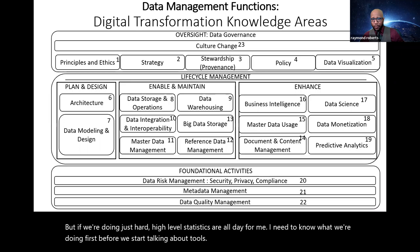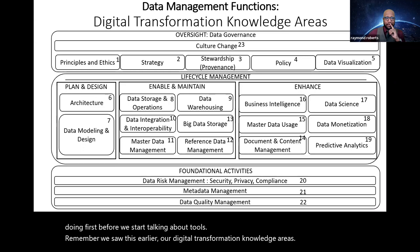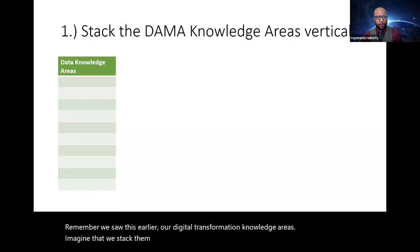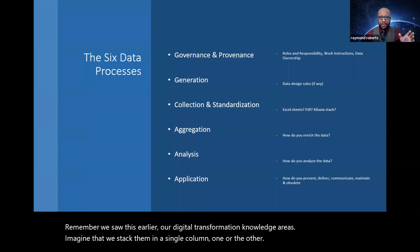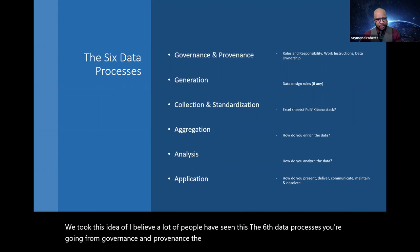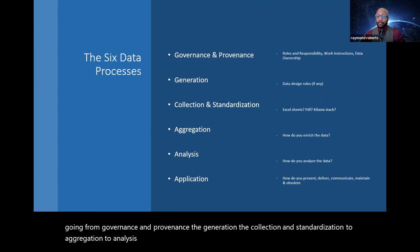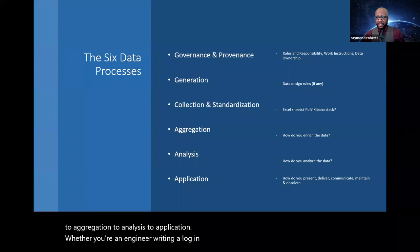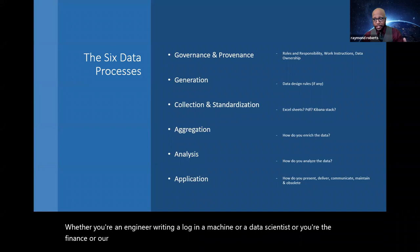If we're doing text analytics, or maybe text cleansing and scraping, I personally like Python better. But if we're doing just hard, high level statistics, R all day for me. I need to know what we're doing first before we start talking about tools. Now remember, we saw this earlier, our digital transformation knowledge areas. Imagine that we stack them in a single column, one under the other. Next, we took this idea of, I believe a lot of people have seen this, the six data processes. You're going from governance and provenance, to generation, to collection and standardization, to aggregation, to analysis, to application.